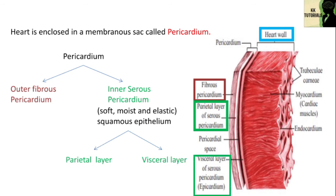Parietal and visceral layers of serous pericardium are separated by a pericardial space. This space is filled with pericardial fluid, about 50 ml, which acts as a shock absorber and protects the heart from mechanical injuries. It also keeps the heart moist and acts as a lubricant.